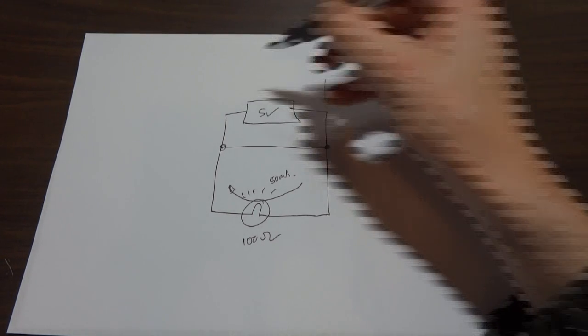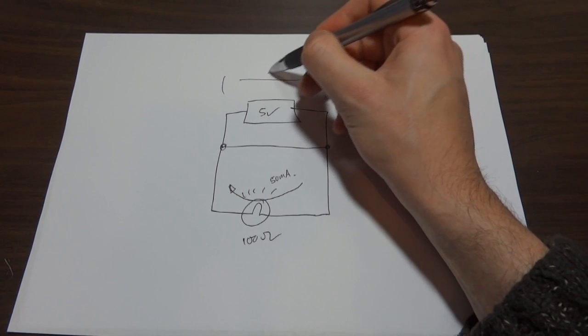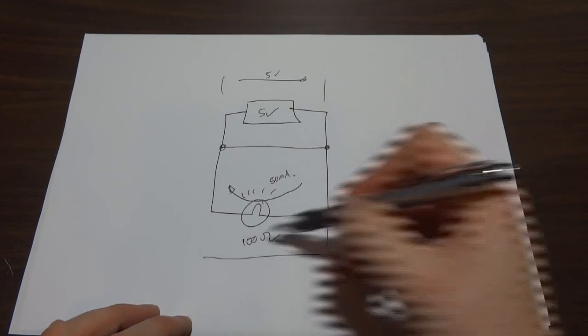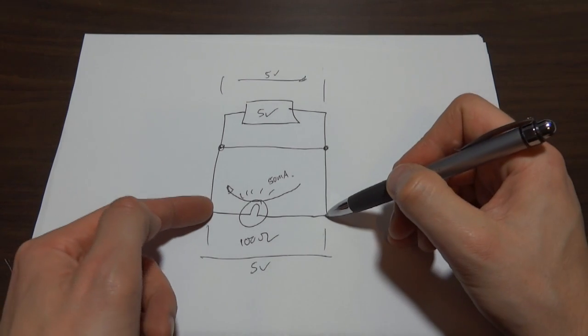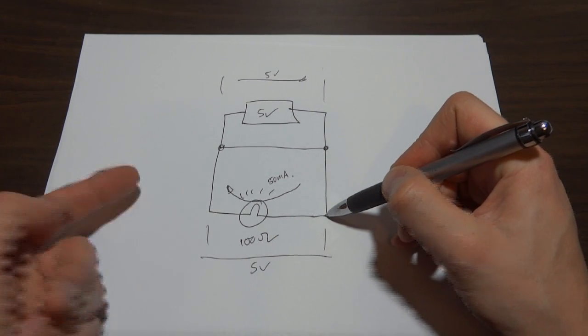But let's just have a look. We've got five volts between these two points, so that's fine, and we've got five volts between these two points. So we've still got five volts across the bulb, so why is it that the bulb doesn't light?